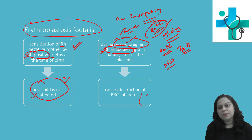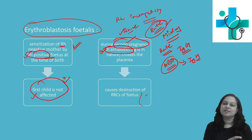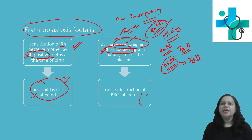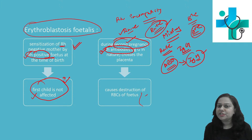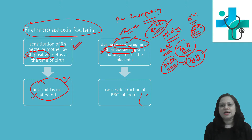In ABO incompatibility, the antibodies present are IgM in nature. Because they are IgM, they cannot cross the placenta and cannot affect the intrauterine child. So usually ABO incompatibility does not cause harm. ABO incompatibility is not harmful as the antibodies are IgM in nature. But in case of RH incompatibility, RH antibodies are IgG in nature and can cross the placenta.